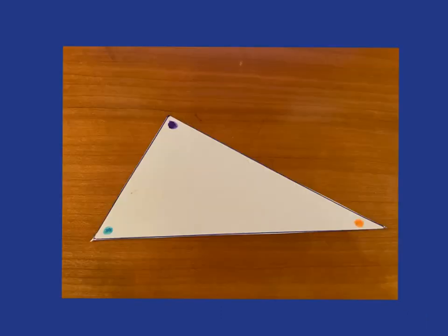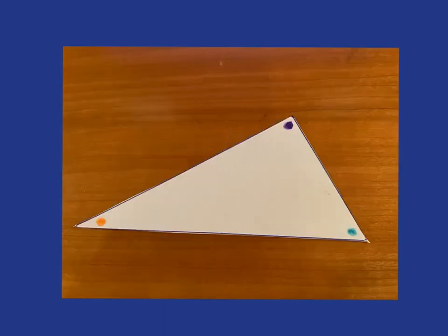We start with a triangle cut out of paper and mark each of the angles in a different color. Then we turn it over and mark the back of those angles in the same colors.